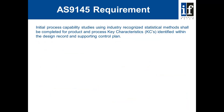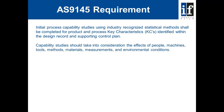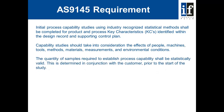There is a requirement within AS9103 to start identifying key and critical items. AS9103.45 further builds on this. Initial process capability standards using industry recognised statistical methods shall be completed for product and process key characteristics identified within the design record and supporting control plans. Capability studies should take into consideration the effects of people, machines, tools, methods, materials, measurements and environmental conditions. The quantity of samples required to establish process capability shall be statistically valid, determined in conjunction with the customer prior to the start of the study.